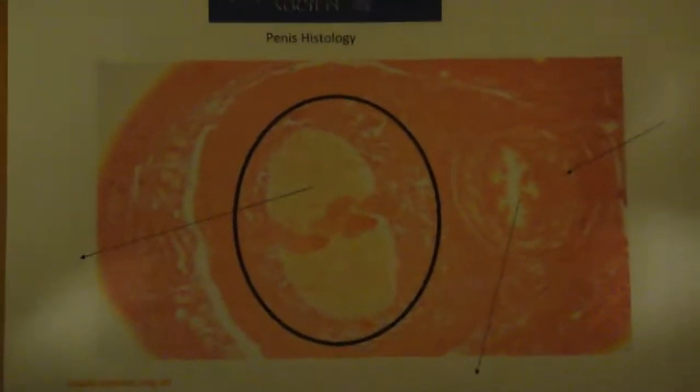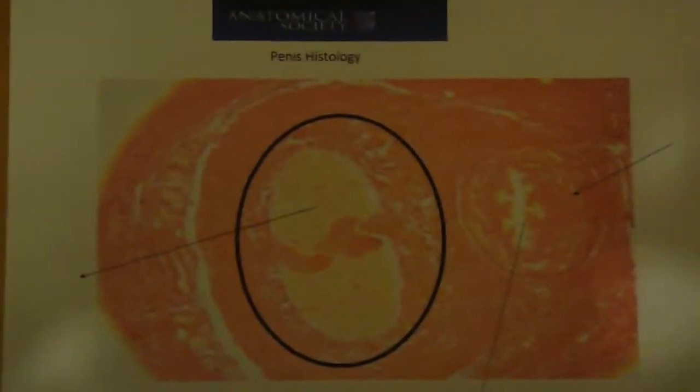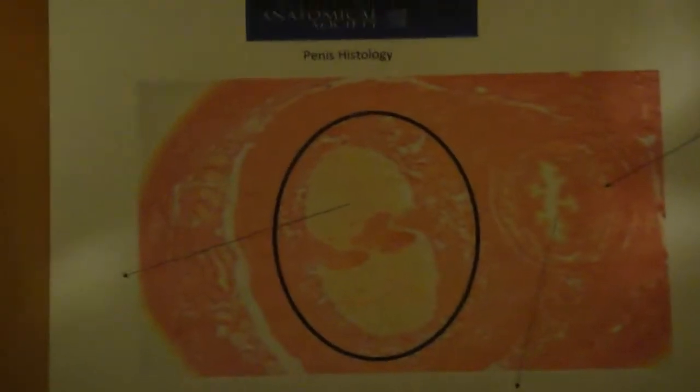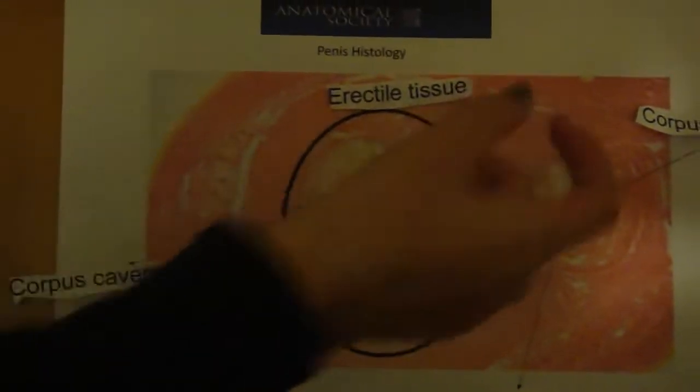In this video, I'm going to discuss the histology of the penis. The penis consists of three cylindrical masses of erectile tissue. These are the two corpus cavernosa, seen here, and the corpus spongiosum, seen here, surrounding the urethra. This circle here is the erectile tissue, just in general.